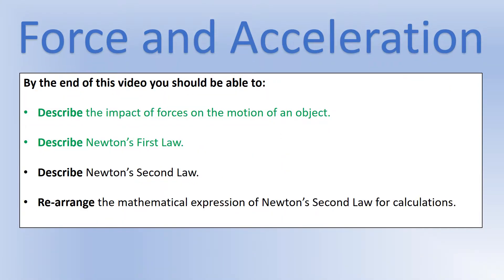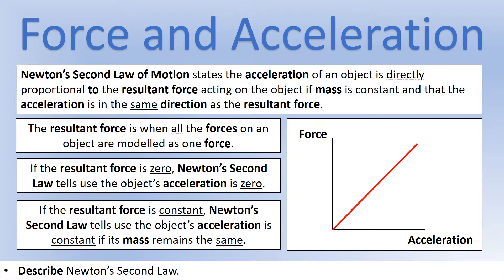Now let's have a look at Newton's second law. Newton's second law of motion states that the acceleration of an object is directly proportional to the resultant force acting on the object, if the object's mass stays constant. It also tells us that the acceleration will be in the same direction as the resultant force.